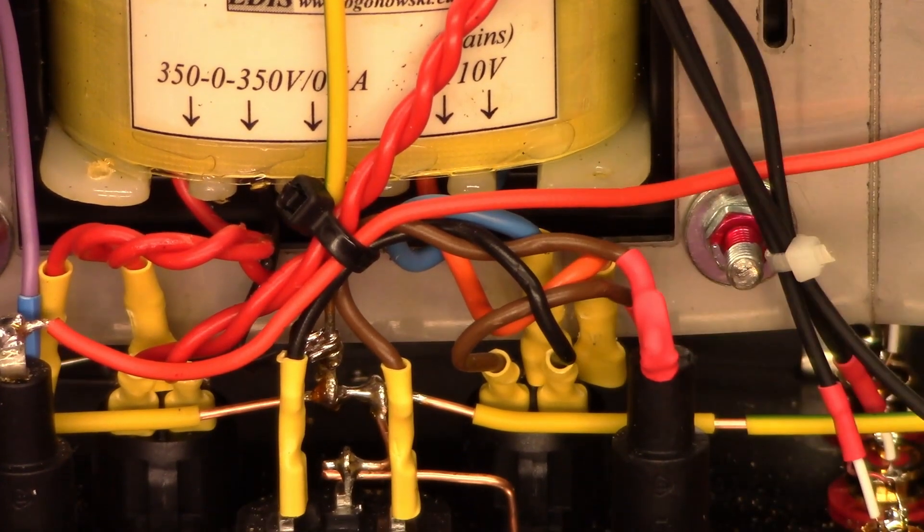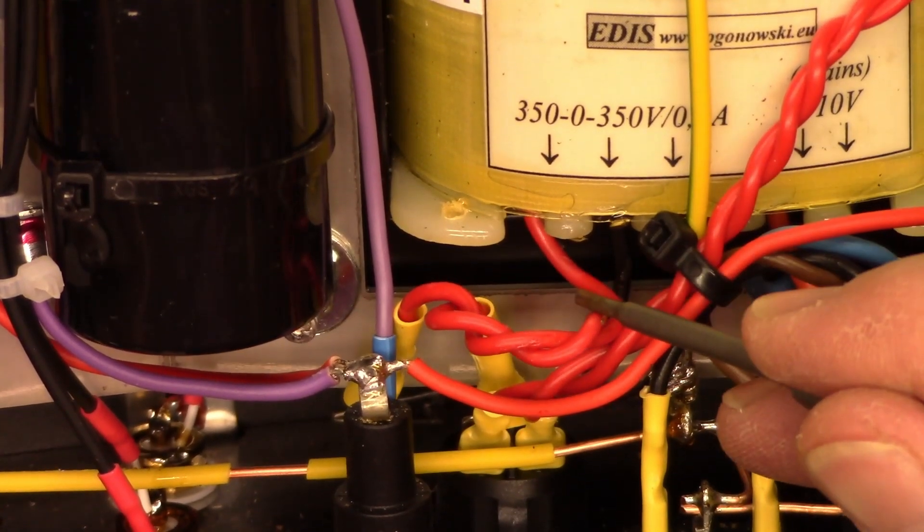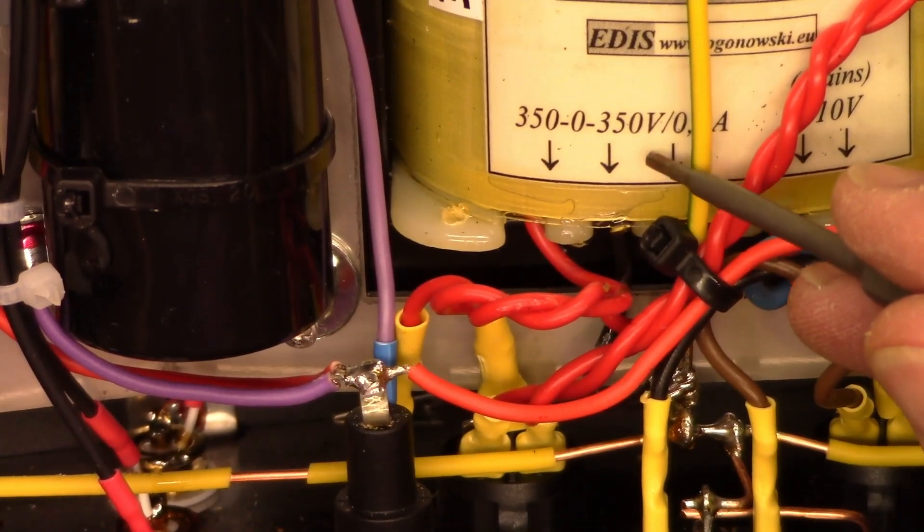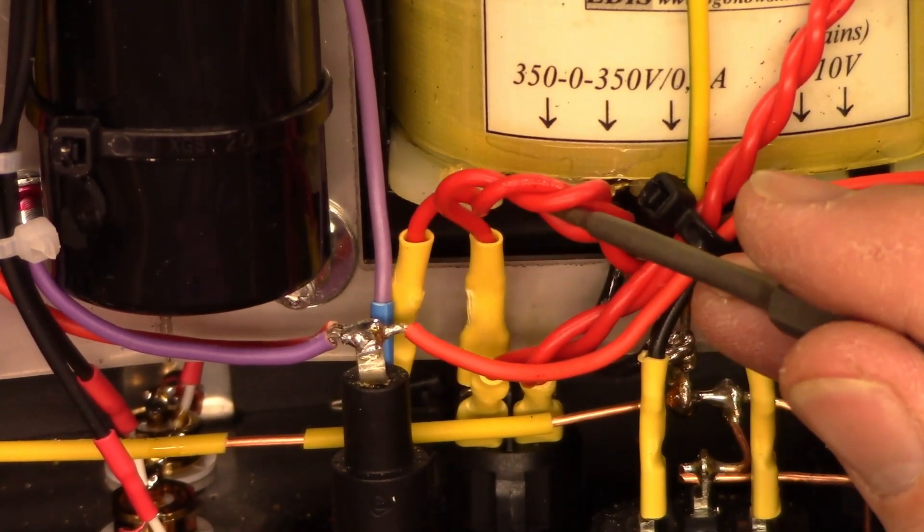So we'll go ahead and connect those up over here. And then now the standby connects this 350 volt output. Which is obviously going to be the plate voltage for the tube. So let's go ahead and plug them in.